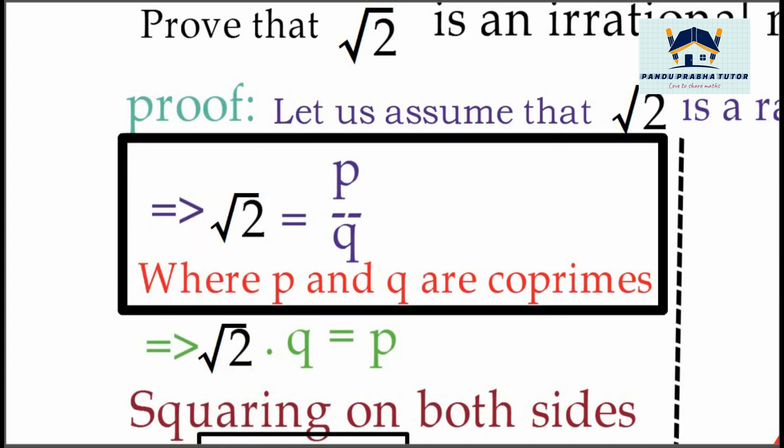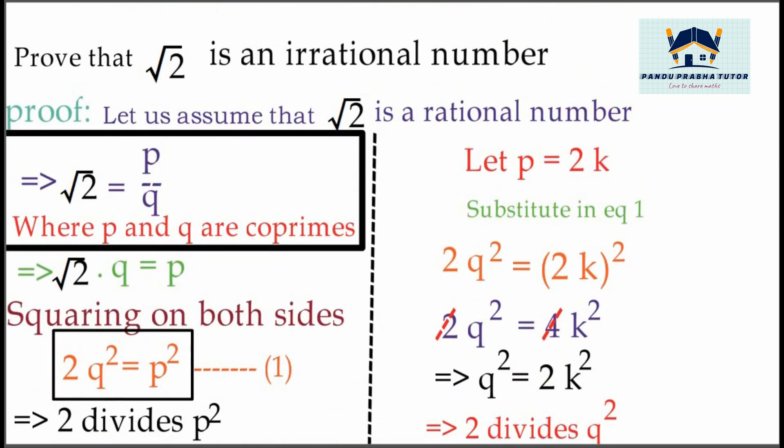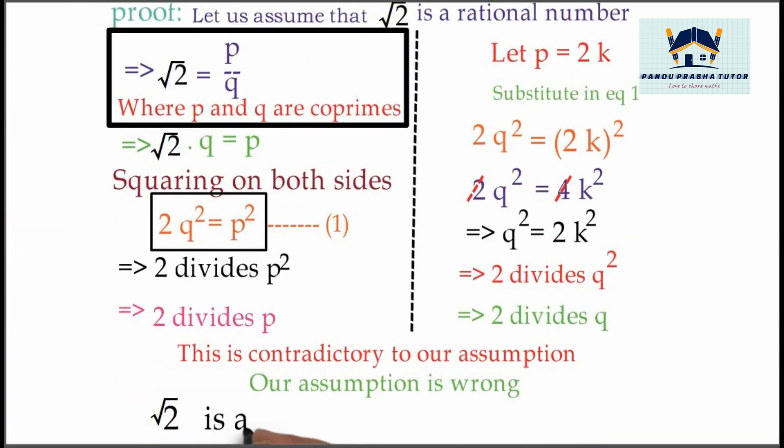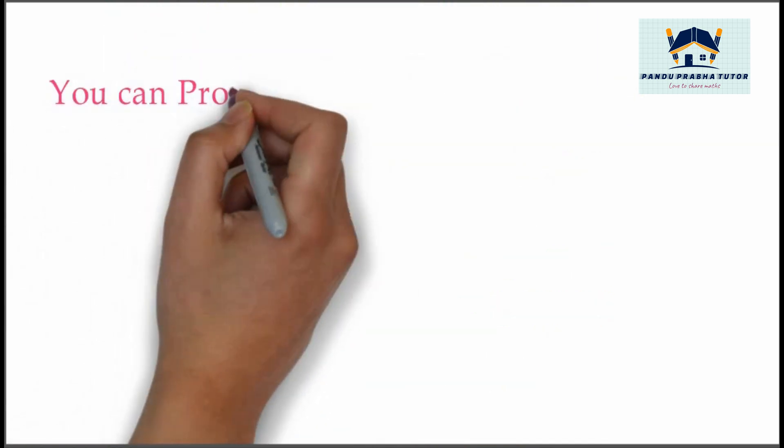Hence, our assumption is wrong. Therefore, √2 is an irrational number. That's the truth.